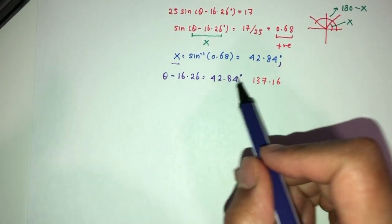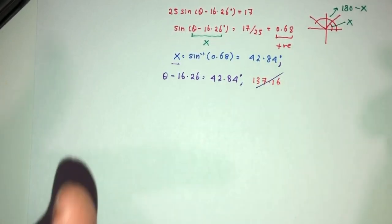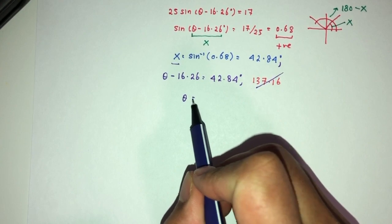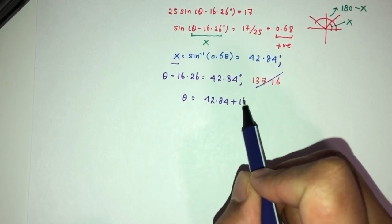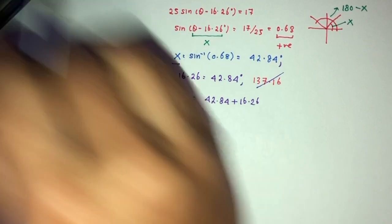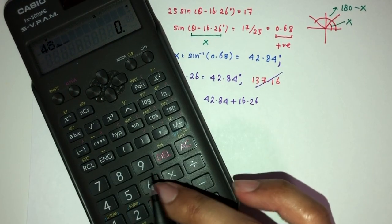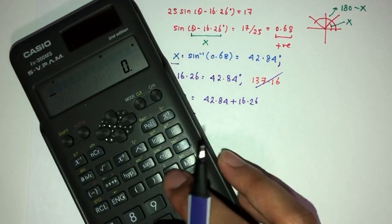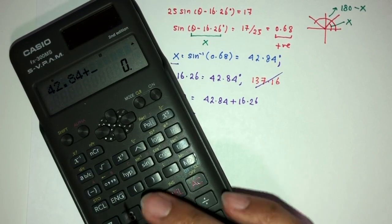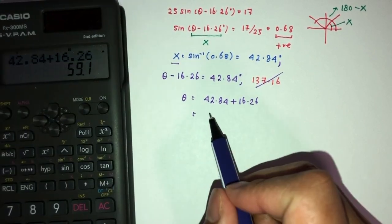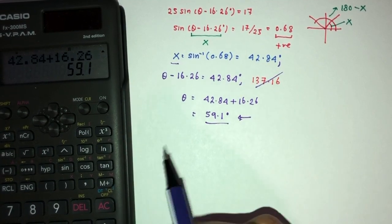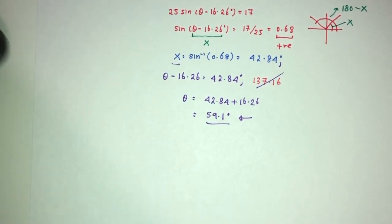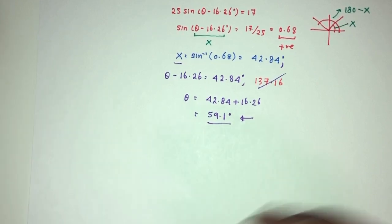So as you can see, this will be obviously the smallest value, so we don't need this one in the end. θ will be 42.84 plus 16.26. Let's see what we get with that. 42.84 plus 16.26. That'll be 59.1 degrees for your value of θ, for the smallest value of θ in this question. And that is your question number two.